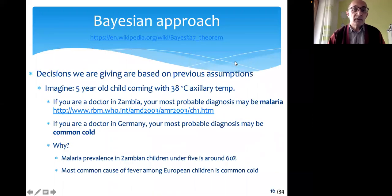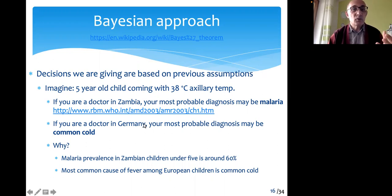Now, once you have understood what these terms mean — sensitivity, specificity, positive, negative, etc. — I should be able to explain the Bayesian approach. In classical medicine, we try to categorize people as positive or negative.